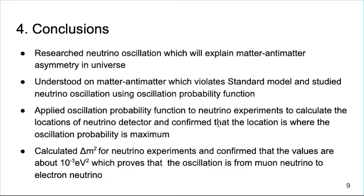By calculating the delta m squared of each accelerator experiment and confirming that the value is about 10^-3 eV², it was confirmed that the neutrino oscillation from muon neutrinos to electron neutrinos was successfully carried out as planned. Thank you for listening.